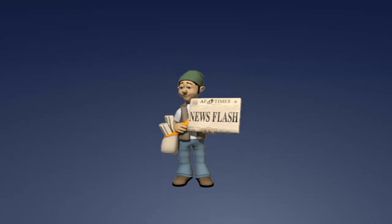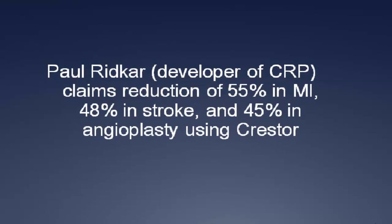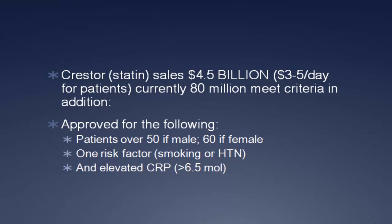Here's a recent study that appeared in many newspapers. Crestor, one of the statin drugs used to treat hyperlipidemia, was touted as being able to reduce MI by 55%, stroke by 48%, and angioplasty by 45%. Let's look at the absolute risk reduction and number needed to treat. Crestor is a major moneymaker with annual sales of $4.5 billion. This was a study to extend Crestor's approved use for patients who were male and over 50, or female and over 60, with one major risk factor such as smoking or hypertension and an elevated C-reactive protein (CRP). Interestingly, the primary investigator was the developer of the CRP test. Importantly, this was a comparison to no drug.